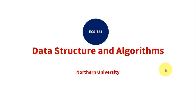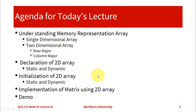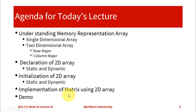Welcome dear students to ECS 721, Data Structures and Algorithm. Today the agenda for the lecture: we'll first try to understand the memory representation of single dimensional arrays, then we'll dive into two dimensional arrays in its two representations — row major representation and column major representation. We'll go through examples of how to declare and initialize static and dynamic arrays, and then discuss how to implement a program using two dimensional arrays to add and subtract matrices. I'll give you a demo at the end of the lecture. So let's get started.